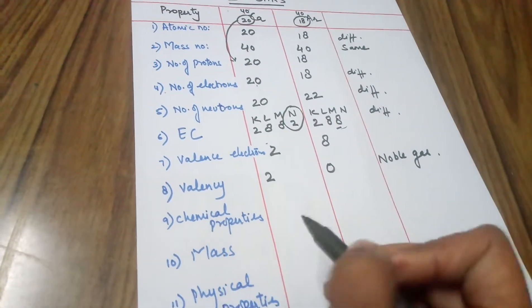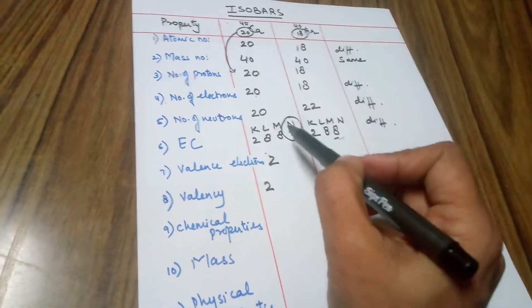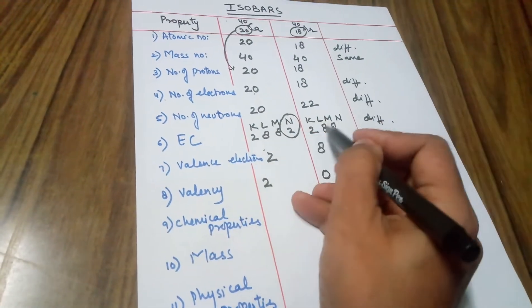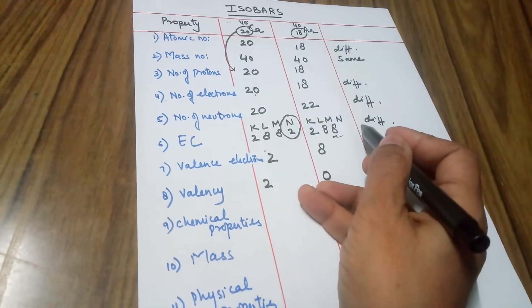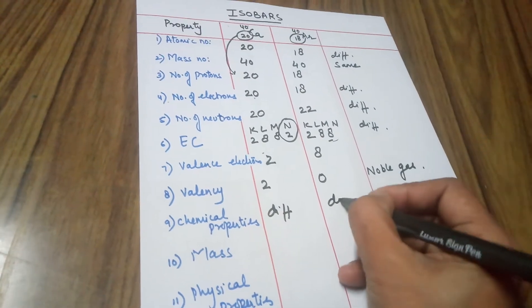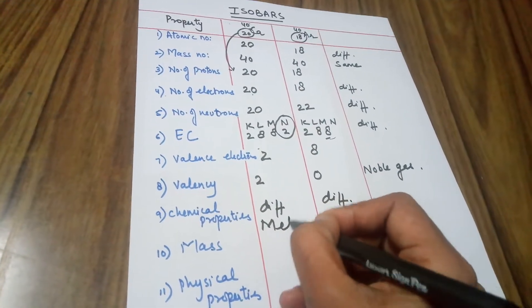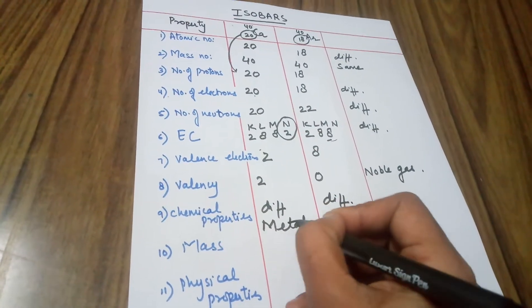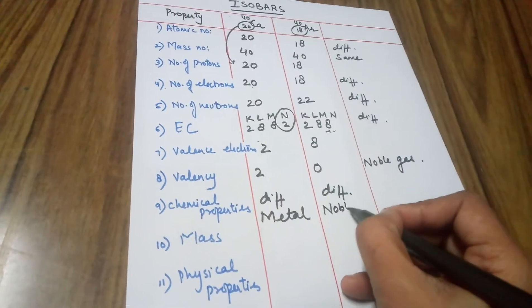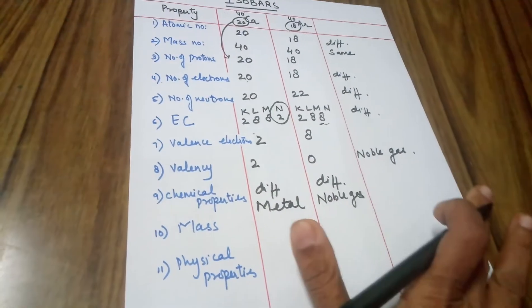Coming to the chemical properties: chemical properties are dependent on electronic configuration. Since the electronic configuration is different, the chemical properties will not be the same — they would be different. In fact, calcium is a metal while argon is a noble gas. Definitely there is a difference between the two.